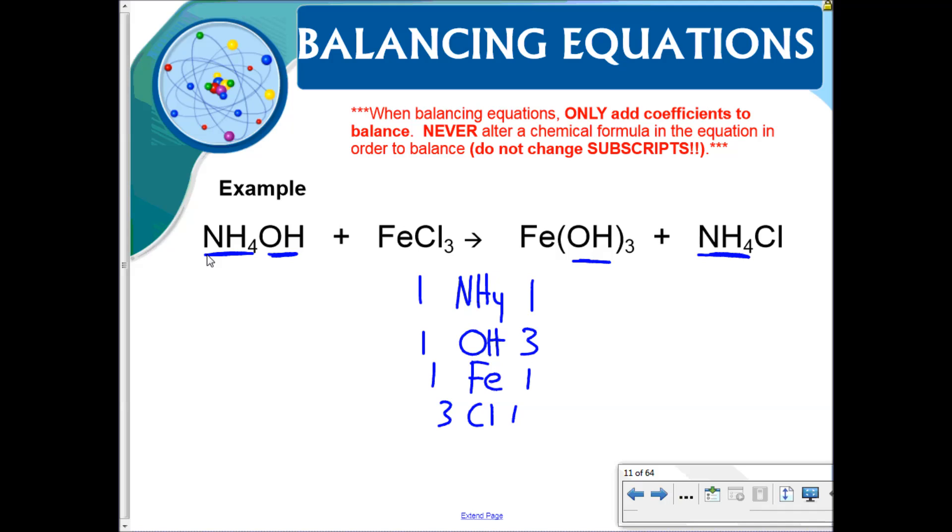If I pick some place to start balancing, say I start with the hydroxide, I'm gonna put a 3 here. That makes me have three ammonium, three hydroxide. If I come over here, let's fix the ammonium. I put a 3 here, that means that there's three ammonium and three chlorine, and so it is now balanced.